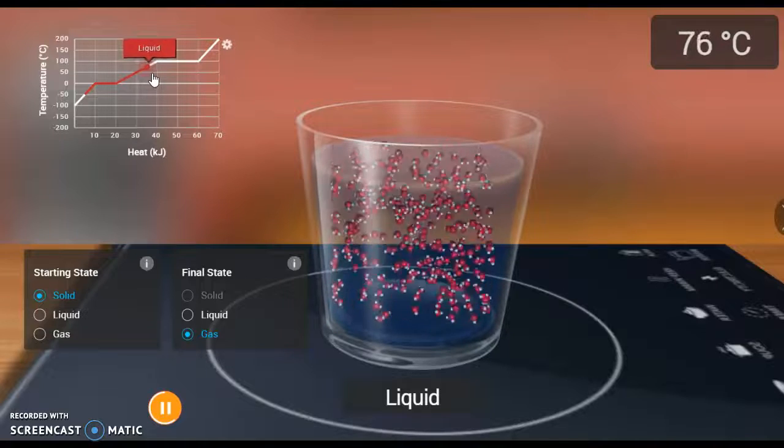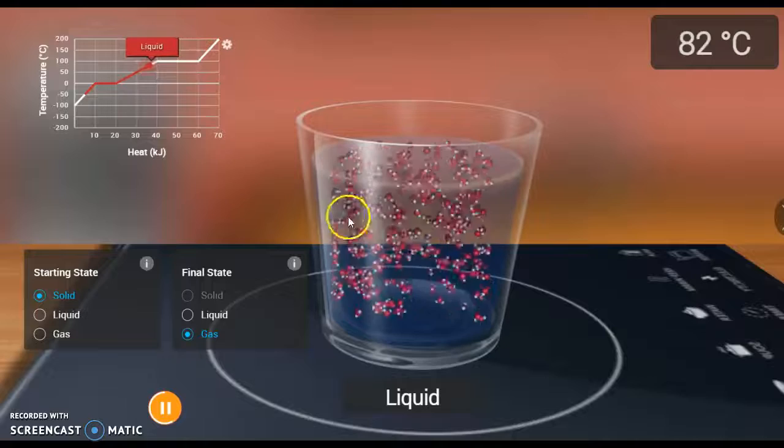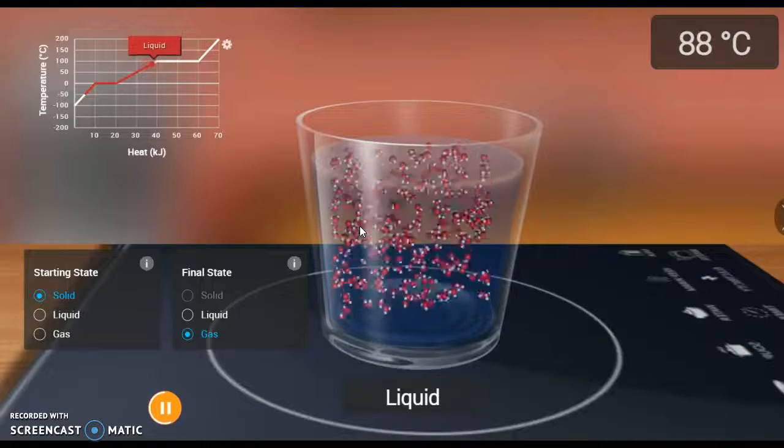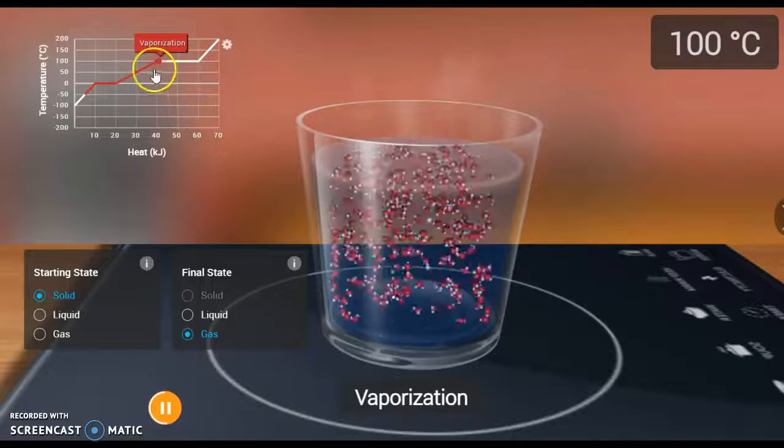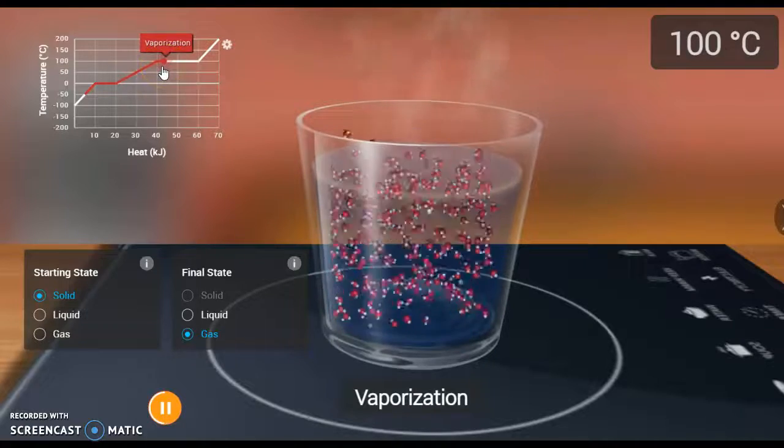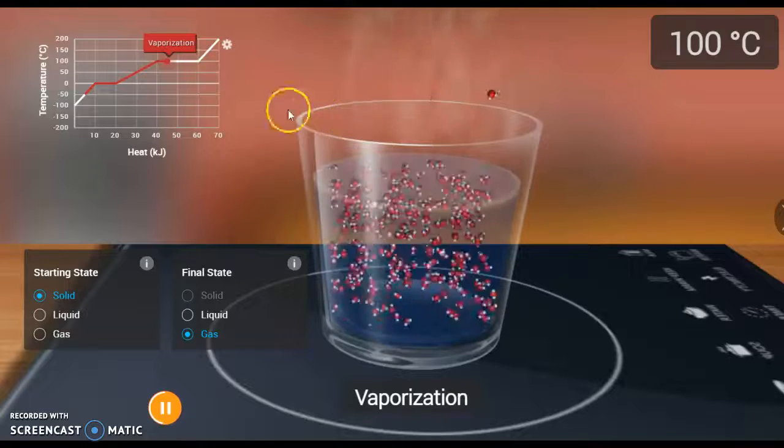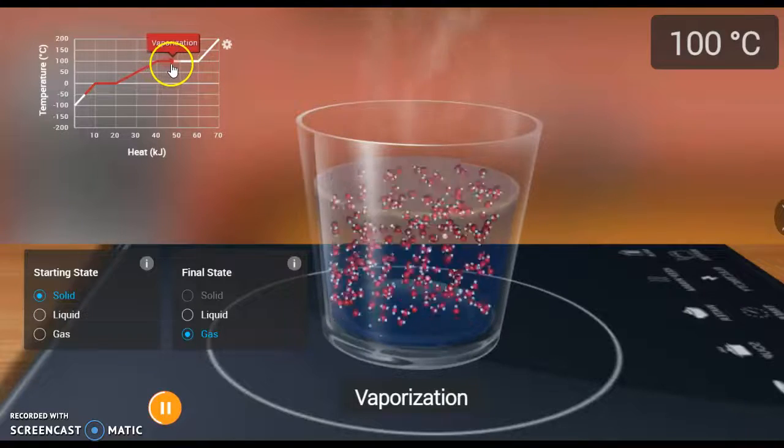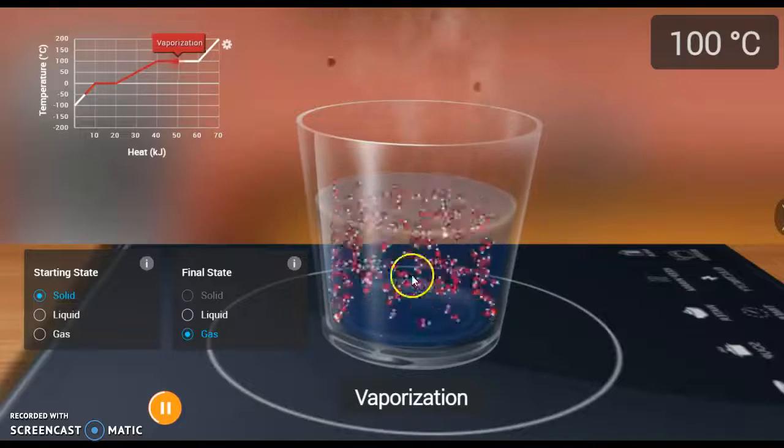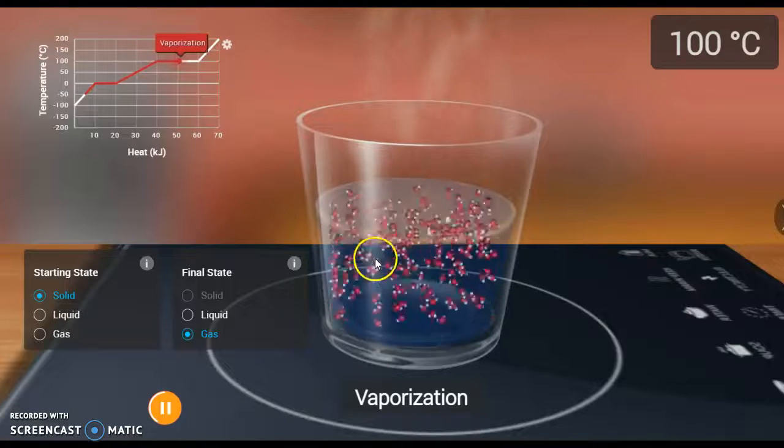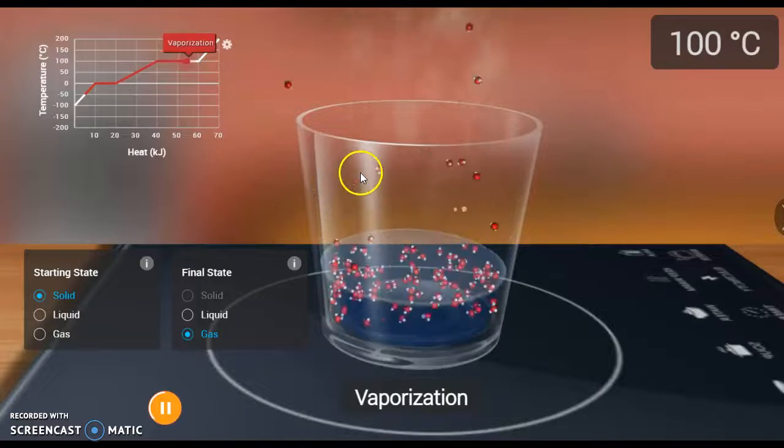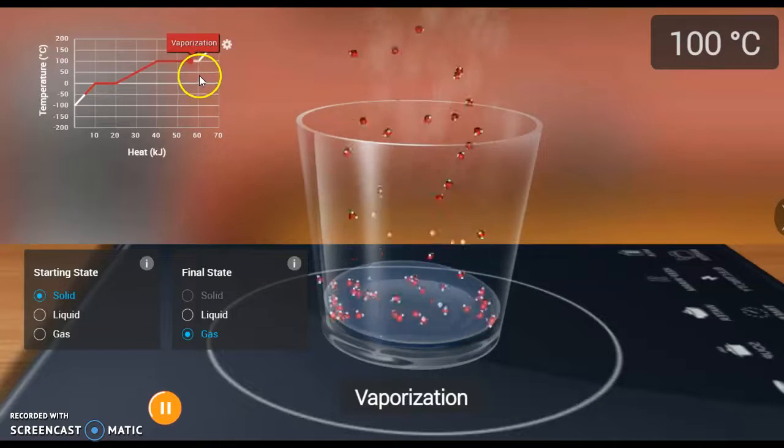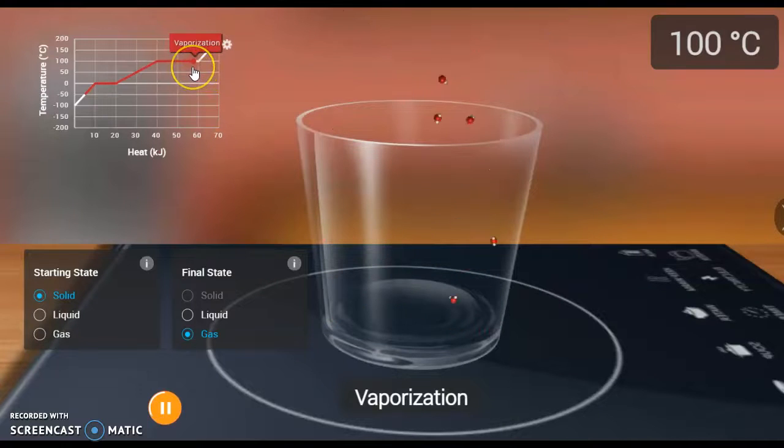And then those molecules get to the point where they have so much energy they start to escape and change from a liquid to a gas. Once it is changing from a liquid to a gas, not only are they escaping, but that temperature stays the same. Because again, some relatively weak bonds between these molecules are breaking. As those bonds break and those molecules become completely free, that temperature stays the same.